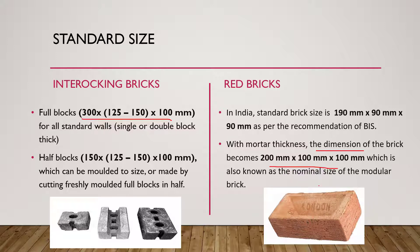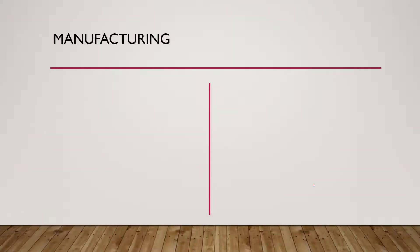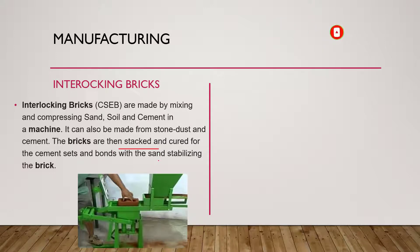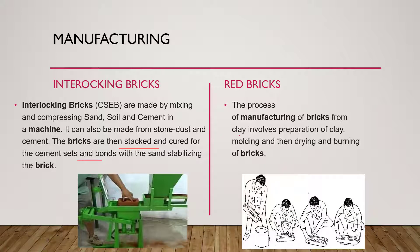Interlocking bricks are manufactured by mixing and compressing sand, soil, and cement in a machine. They can also be made from stone dust and cement. The bricks are then stacked and cured — the cement sets and bonds with the sand to stabilize the brick.